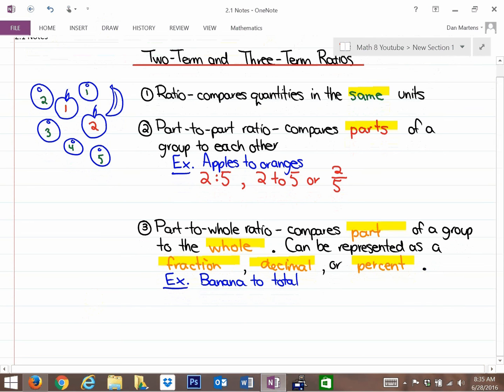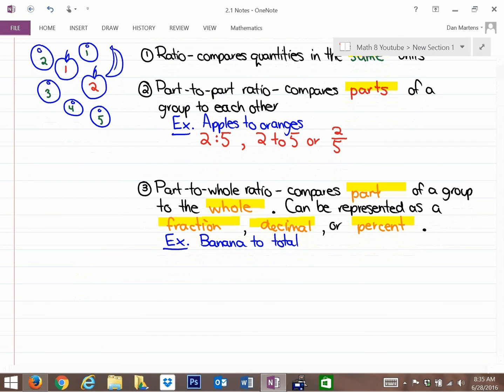So because it's a part-to-whole ratio, we can determine what decimal or percent of the entire group a particular fruit is. So if we're looking at this next example, which is bananas to total, you'll notice that there's eight fruit in total and there's one banana. So the fraction would be one banana out of eight total, and that is your fraction.